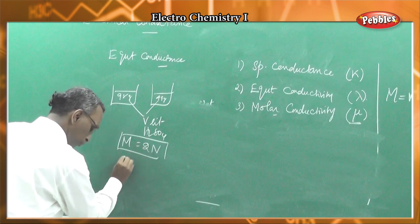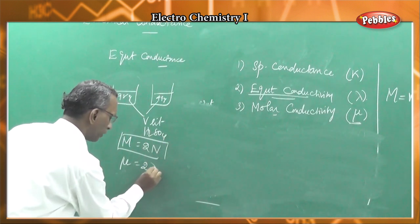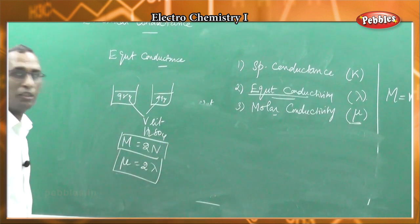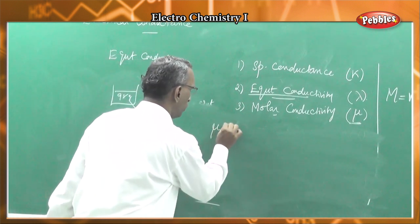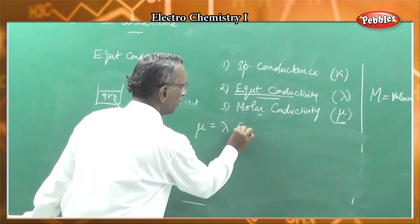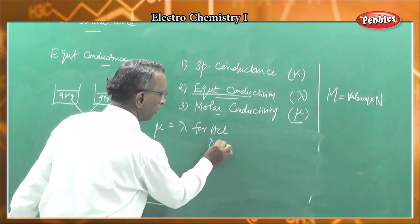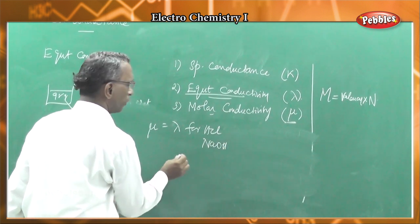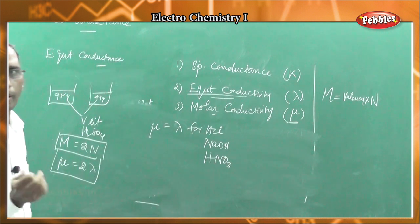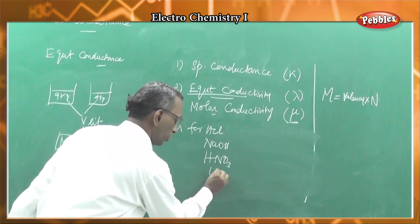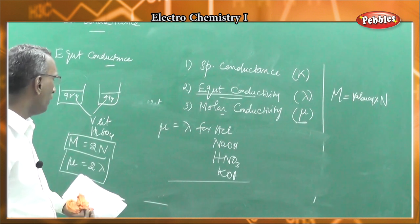Molar conductivity equals twice the equivalent conductivity for sulfuric acid, since valency is 2. For HCl, NaOH, KOH, and nitric acid — where valency is 1 — molar conductivity mu equals equivalent conductivity lambda. So molar conductivity mu equals valency into equivalent conductivity lambda.